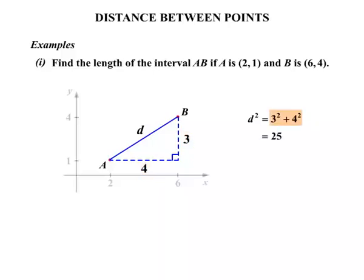Now 3 squared plus 4 squared works out to be 25. And if d squared equals 25, then therefore d is the square root of 25. And that of course equals to 5.